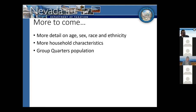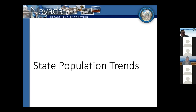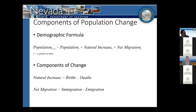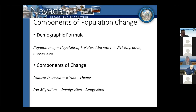Obviously a lot has happened since April 1, 2020. I've been tracking trends more at the state level, trying to get a pulse on what's been going on with our state population. When trying to estimate population, we have to go back to the basic demographic formula: we take the known population at a previous time point, add natural increase, add net migration, and that gives us an estimate for the current time point. Natural increase is births minus deaths, and net migration is immigration minus emigration.